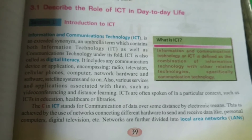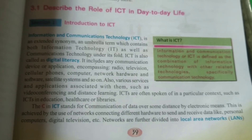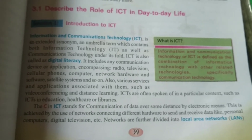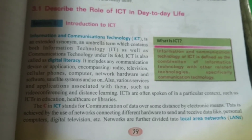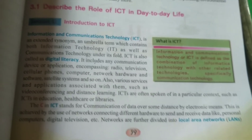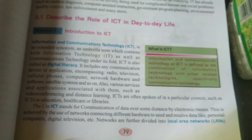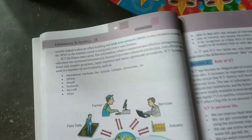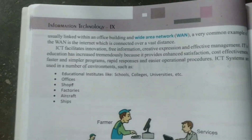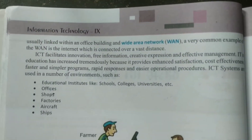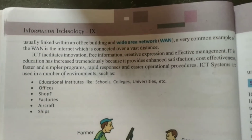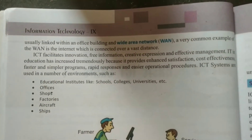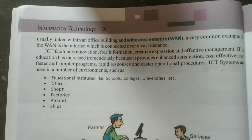Students, actually networks are divided into four parts: LAN, WAN, MAN, and PAN. But here only two networks are mentioned — LAN, local area network, just like your computer lab, which is the best example of LAN — and WAN, the internet. How we are communicating with each other with the help of WAN — a very common example of WAN is internet, which is connected over a vast distance.